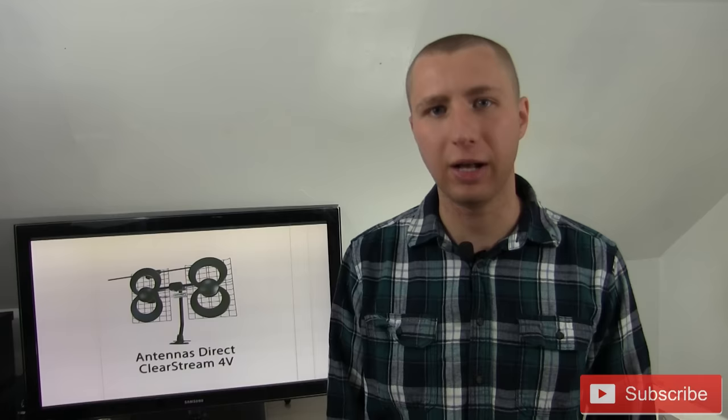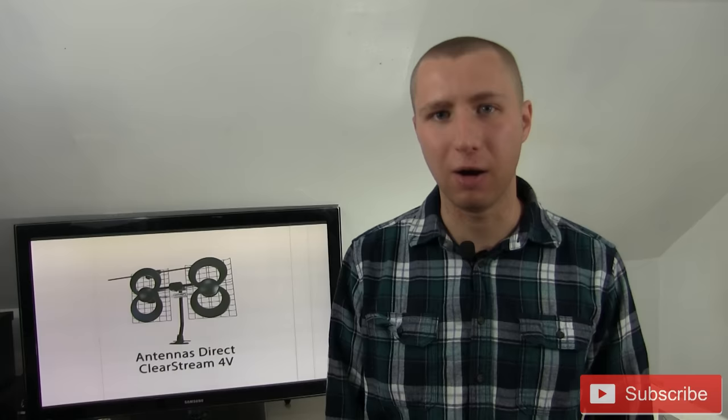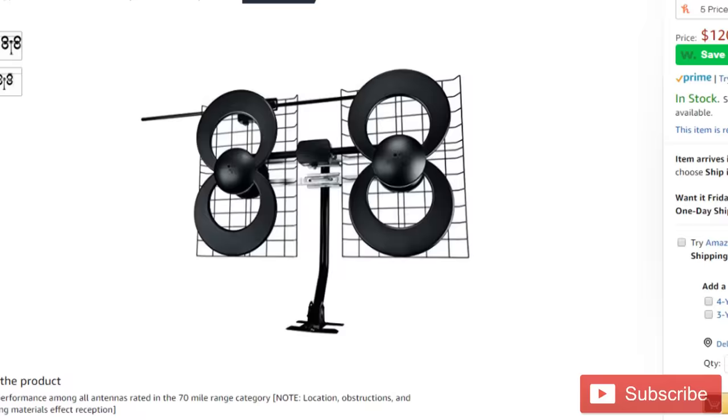Keep in mind this antenna is directional. So you want to make sure that's pointed in the right direction of the broadcast towers. And you can see this on antennaweb.org, the exact direction the antenna should be pointed in. This antenna runs about $120 on either Best Buy or Amazon. And as I said, it does a really good job pulling in stations within 60, 70 miles if you're in flat terrain.